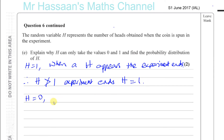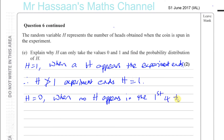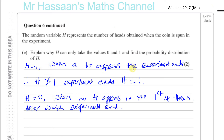And H is equal to 0 when no heads appear in the first four throws, after which the experiment ends. So H can be 0 when no heads appear, or it can be 1 when one head appears in any of the first four throws — and whenever it appears, the experiment stops, so H cannot be more than 1.